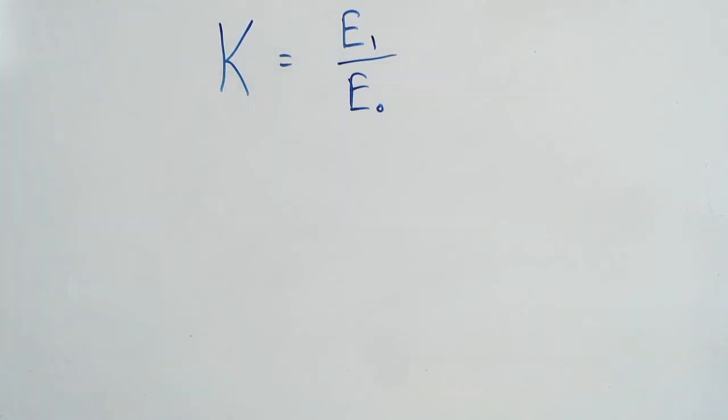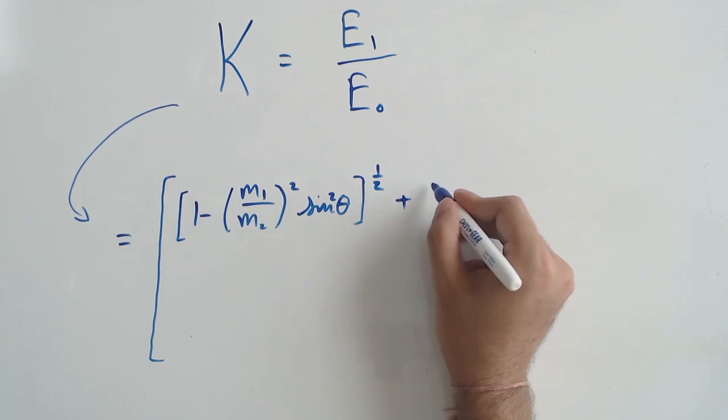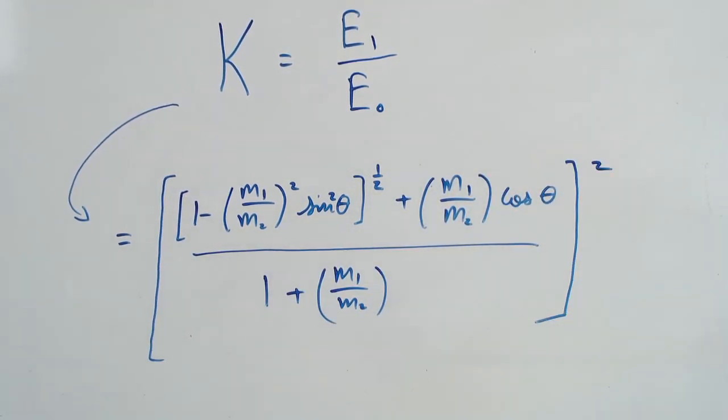In essence, we can call k the kinematic factor, to describe the ratio of the recoiling projectile energy to the initial projectile energy.